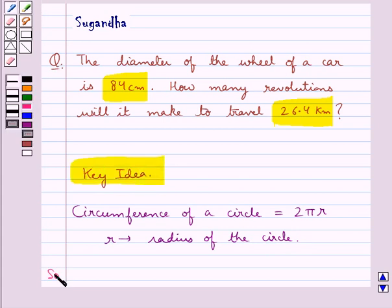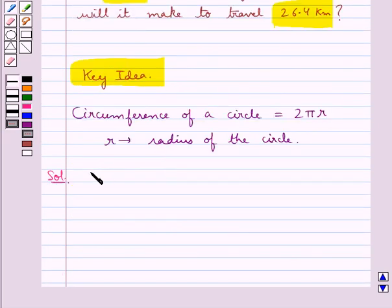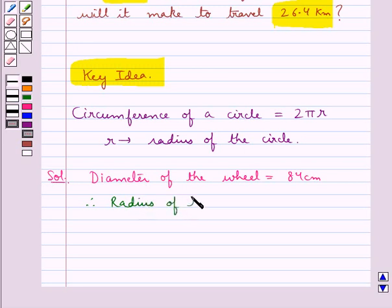Let's move on to the solution now. We are given the diameter of the wheel is equal to 84 cm. Therefore, the radius of the wheel is equal to 84 divided by 2 cm, which is equal to 42 cm.